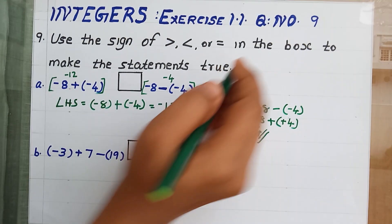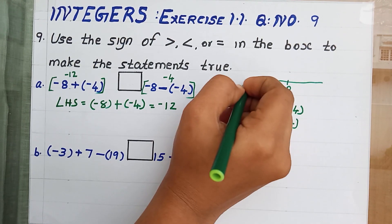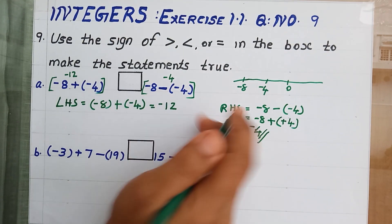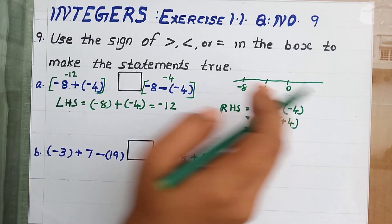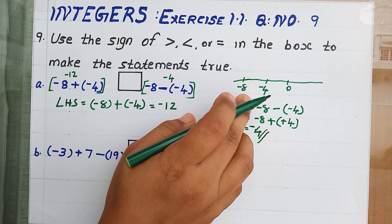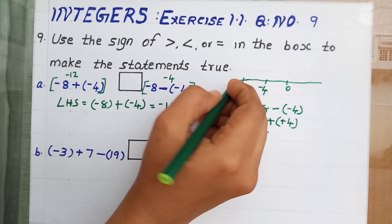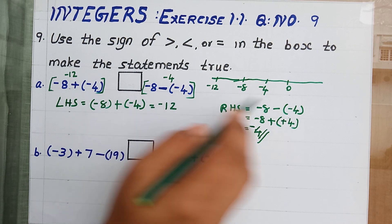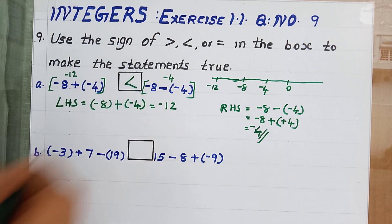Now compare minus 12 and minus 4. Which one is higher? On the number line, you can see minus 4 is to the right and minus 8 is to the left. The number that lies on the left side of the number line is smaller, and on the right side is greater. So minus 8 is lesser and minus 4 is greater. Therefore minus 12 is lesser than minus 4, and the sign should be less than.